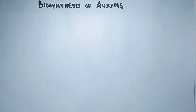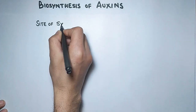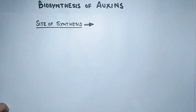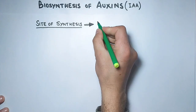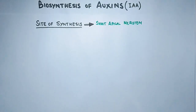First let's see the sites of auxin synthesis in the plant. Most auxins are produced in the shoot apical meristem, which is the source of all above-ground organs of the plant. Cells at the shoot apical meristem act as stem cells to the surrounding peripheral region.